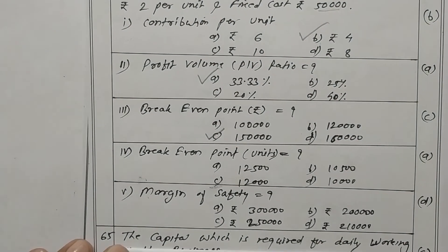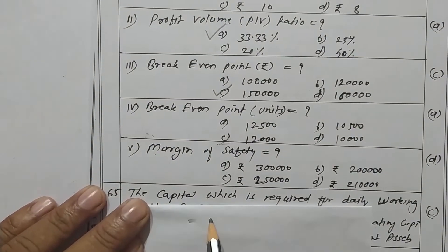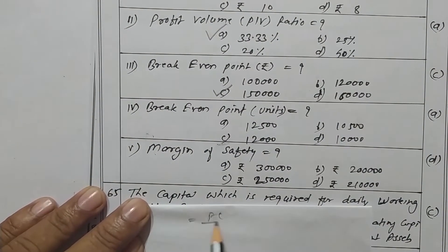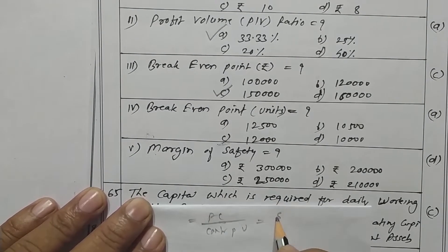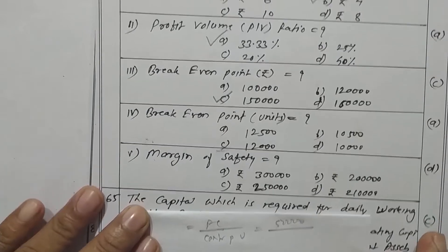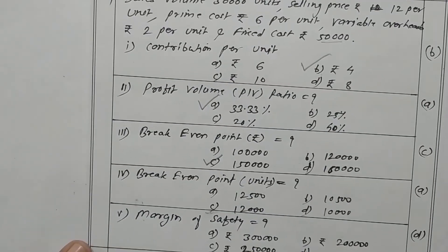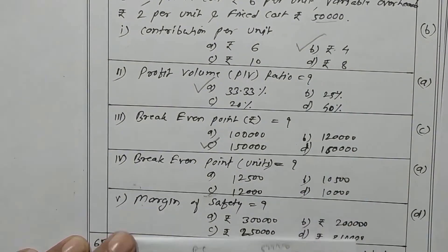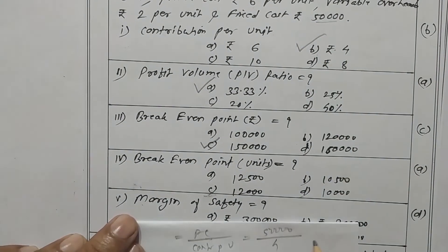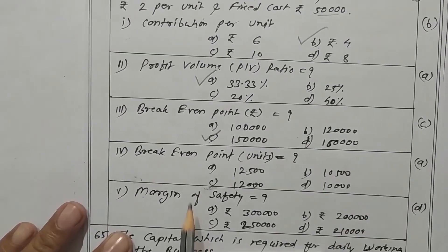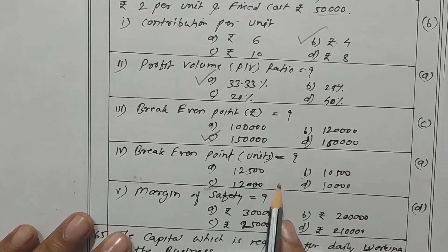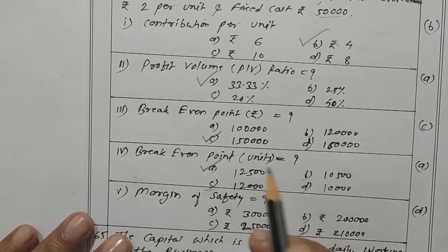Now BEP in units. The formula is fixed cost upon contribution per unit. Fixed cost is rupees 50,000 and contribution per unit is rupees 4, giving an answer of 12,500 units. Option E is the correct one.